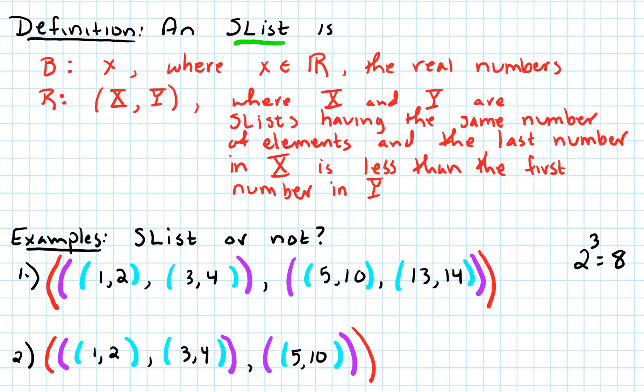And in general, these S-lists always have two to the P elements, where P denotes the depth of the S-list. So in this case, our depth would be three.